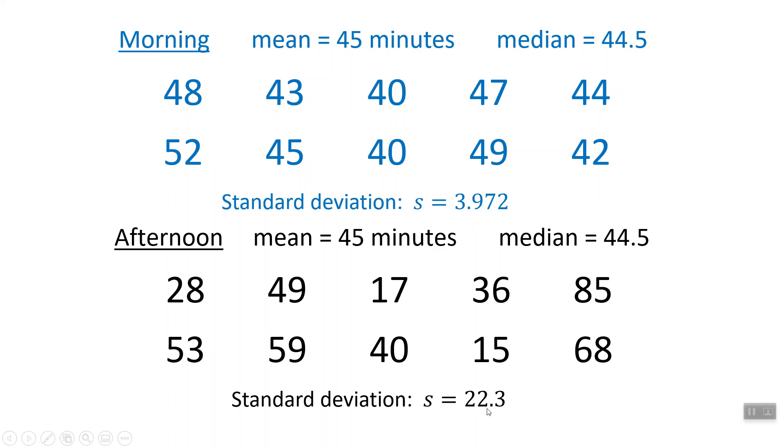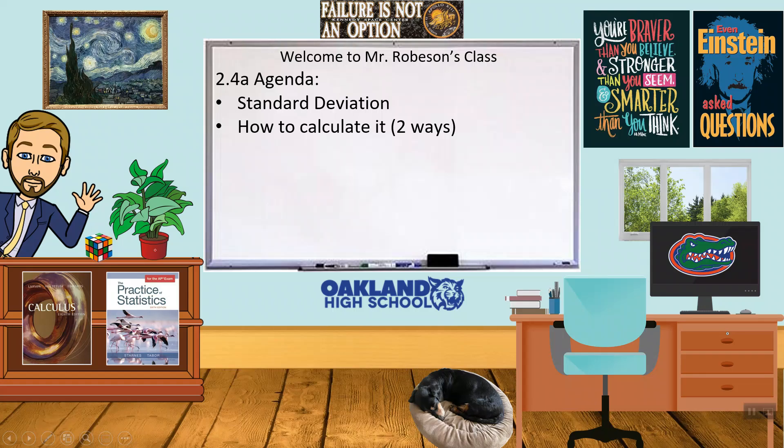One of them has a standard deviation of four, one of them has a standard deviation in the twenties. This one is more spread out. The standard deviation for the afternoon class is larger than the standard deviation for the morning class. We usually use subscripts to denote things, M for morning, A for afternoon. So more spread out.